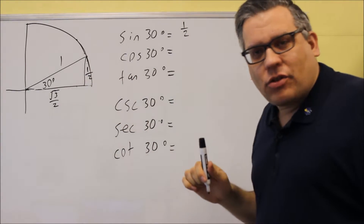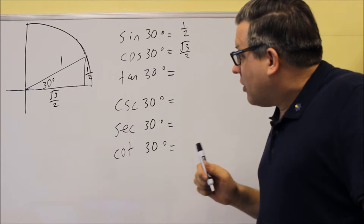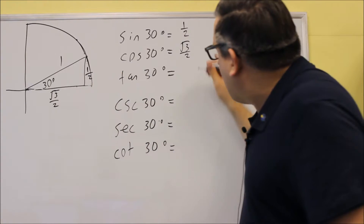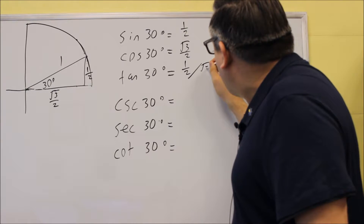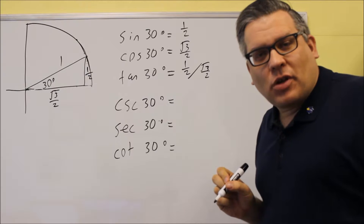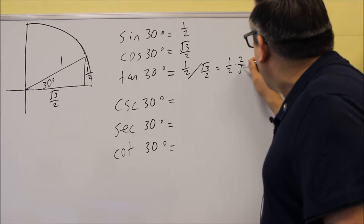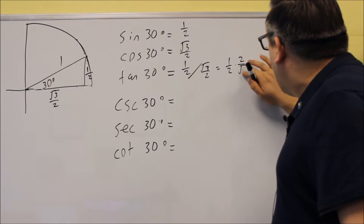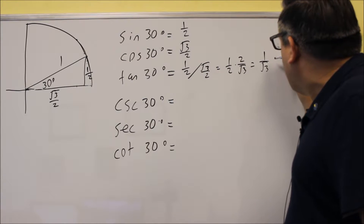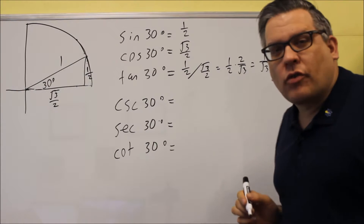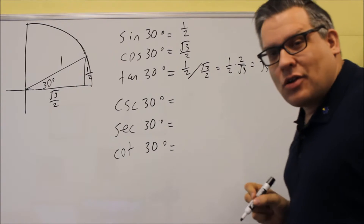Cosine 30 is the x value, square root of 3 over 2. Tangent 30 is the y value over the x value: 1 half divided by square root of 3 over 2. Dividing fractions is the same as multiplying by the reciprocal, so we do 1 half times 2 over root 3. The 2's cancel, giving 1 over root 3, and after rationalizing we get square root of 3 over 3.